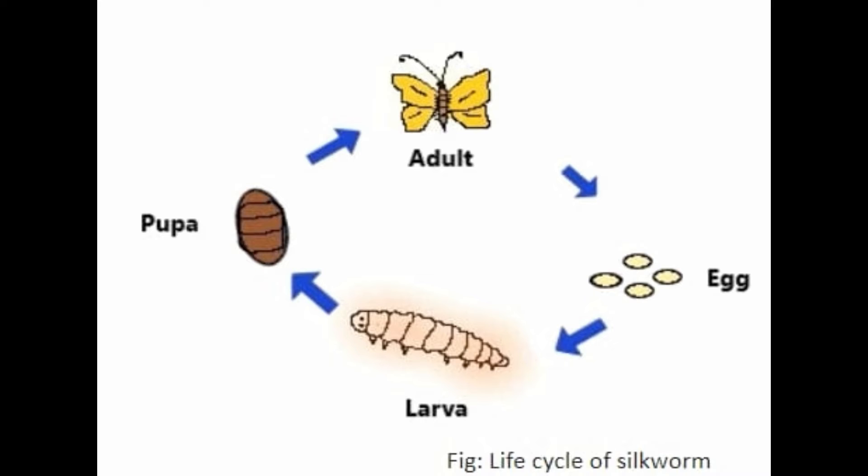We need to know the life history of the silk moth. There are four stages in the development of the silk moth: the first is egg, the second is larva, the third is pupa, and the fourth is adult.